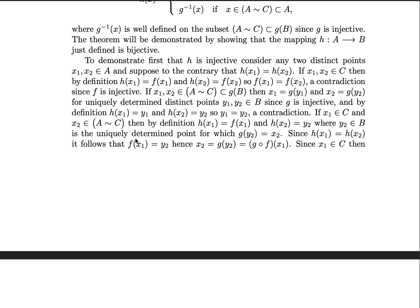Let's suppose instead that they're both outside of C, but they're in A. Then if x₁ and x₂ are in A except for C, then they're subsets of g(B). Then x₁ and x₂ are equal to g(y₁) and g(y₂) for uniquely determined points y₁ and y₂ since g is injective.